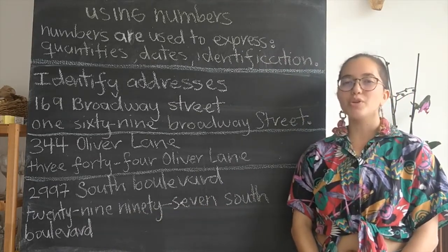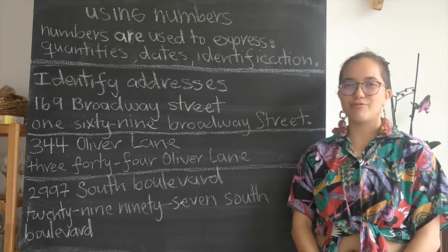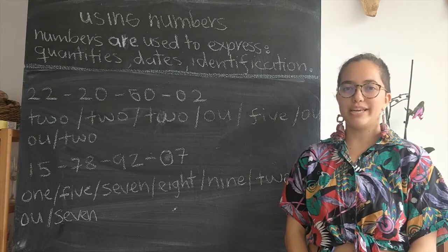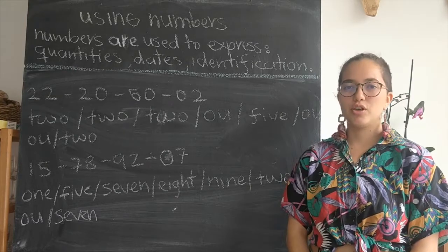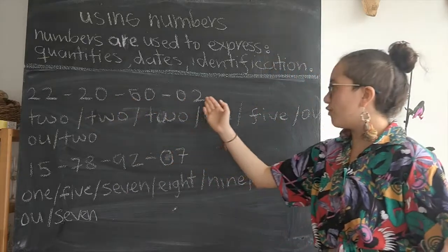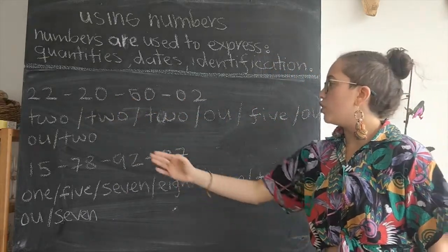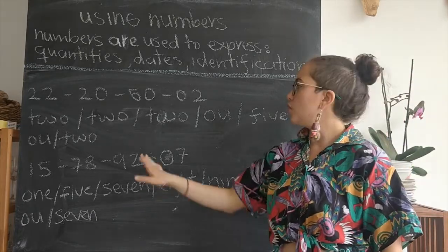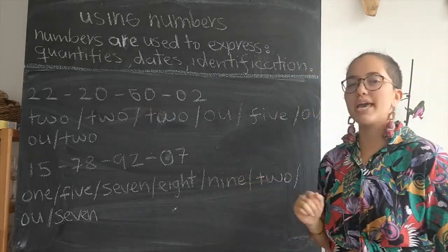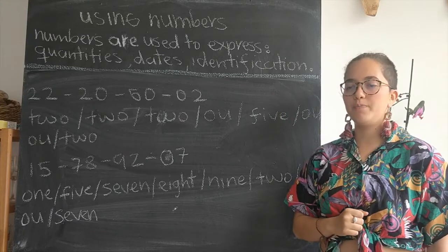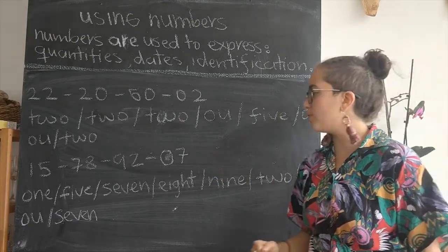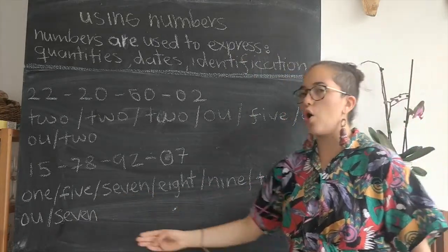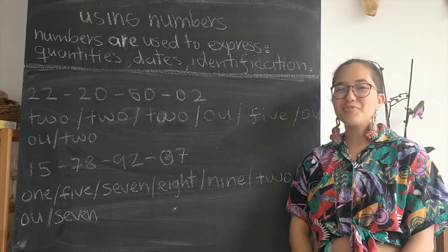Now let's look at how we would use numbers to say a telephone number. To say this telephone number, we would say 222 05002. So instead of saying zero, we say 00. Now let's look at this telephone number — we would say 157-892-07. Thank you for listening.